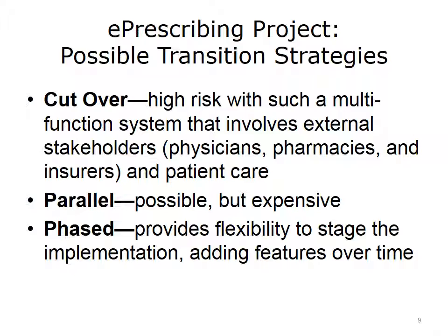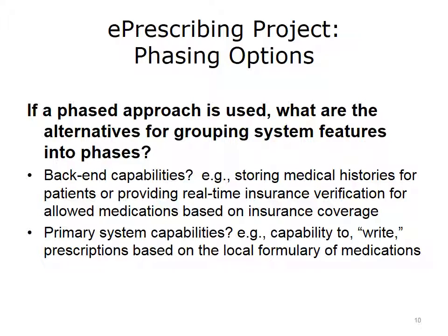Phased approaches can be used in various combinations. In a phased approach, start with having the medications the patient is currently on entered into the system over a matter of weeks or months. The next phase could be having the prescriber print new or changed medications out of the system and giving the patient a written or printed prescription. The last part could be phasing in the e-prescribing, where the physician sends the prescription electronically to a regional pharmacy. Talking about options also raises the question of how to partition the system into phases, which could include back-end capabilities such as storing medical history or providing real-time insurance verification as separate activities.